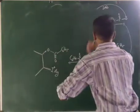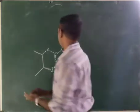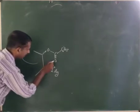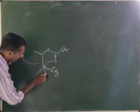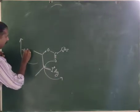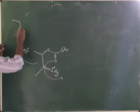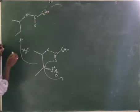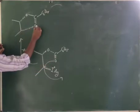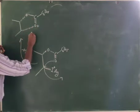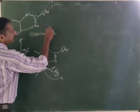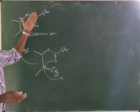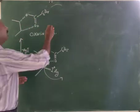Neighboring group participation now occurs: the lone pair on the oxygen of the benzoate ester attacks the adjacent carbon, while Ag is eliminated. This forms an oxonium ion. Up to the formation of the oxonium ion, the mechanism is exactly the same as in Woodward hydroxylation.